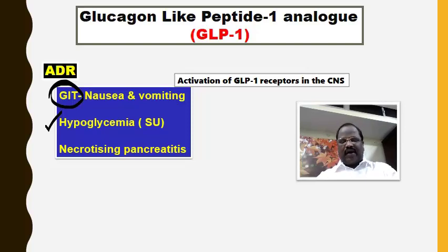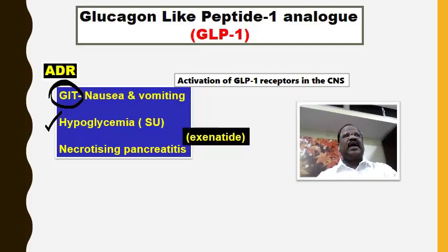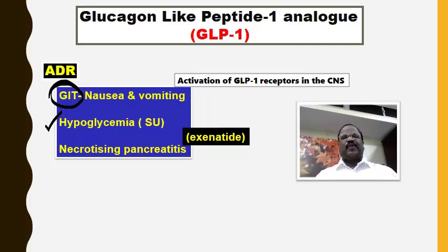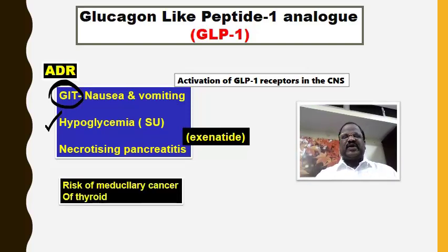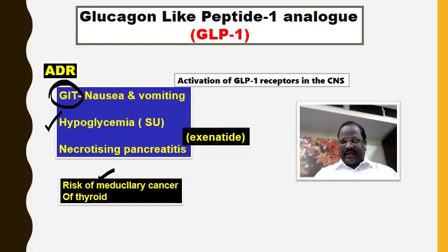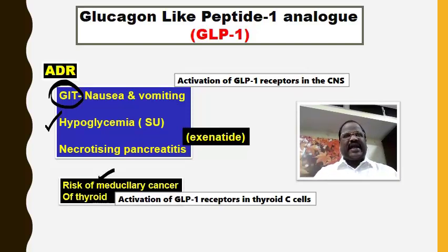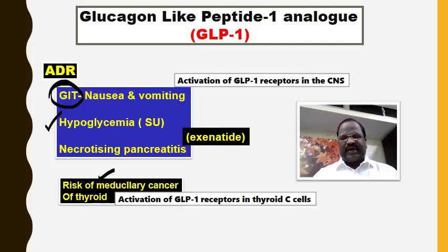Among the GLP-1 analogs, the drug causing maximum pancreatitis problems is exenatide. So, pancreatitis as an adverse effect of an anti-diabetic drug — think of GLP-1 analogs. Another very important point: GLP-1 analogs may cause a risk of medullary cancer of the thyroid, because GLP-1 receptors are present on the parafollicular C cells of the thyroid gland, and their activation may trigger medullary thyroid cancer.